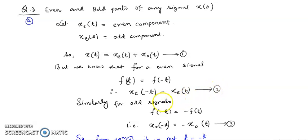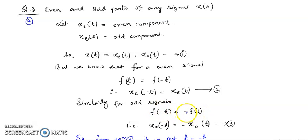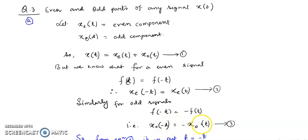For an odd signal, if we replace t by minus t, then f(-t) equals minus f(t). A minus sign comes before the signal, so f(-t) becomes -f(t). Since Xo(t) in equation 1 is the odd part, Xo(-t) becomes -Xo(t), and this is denoted by equation number 3.